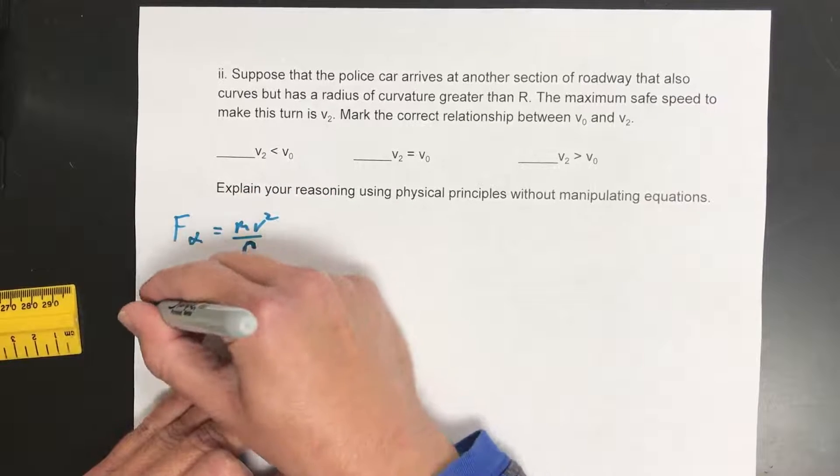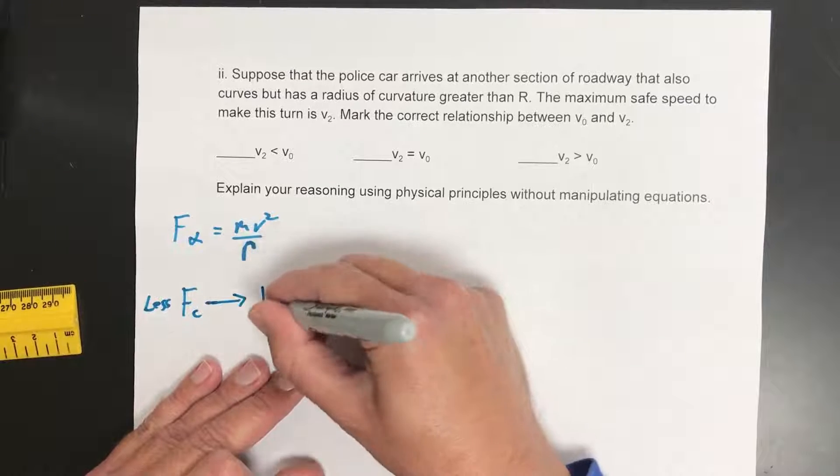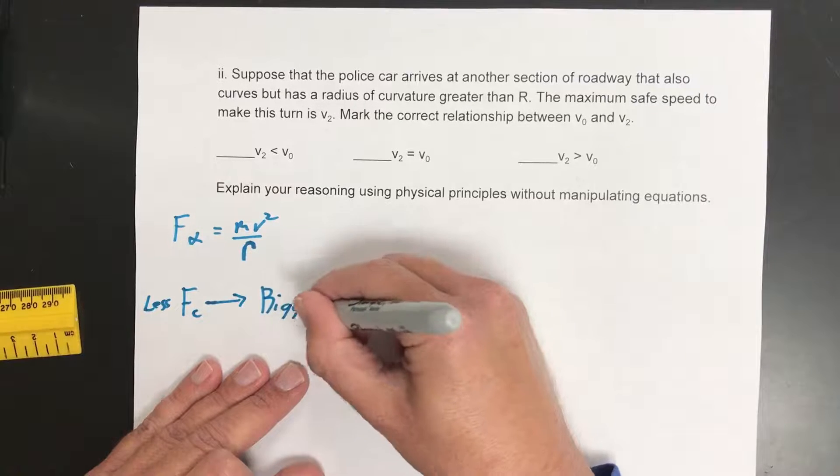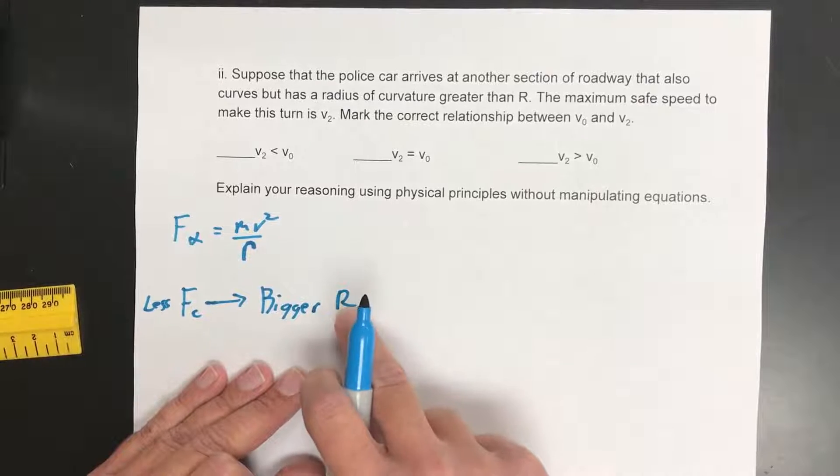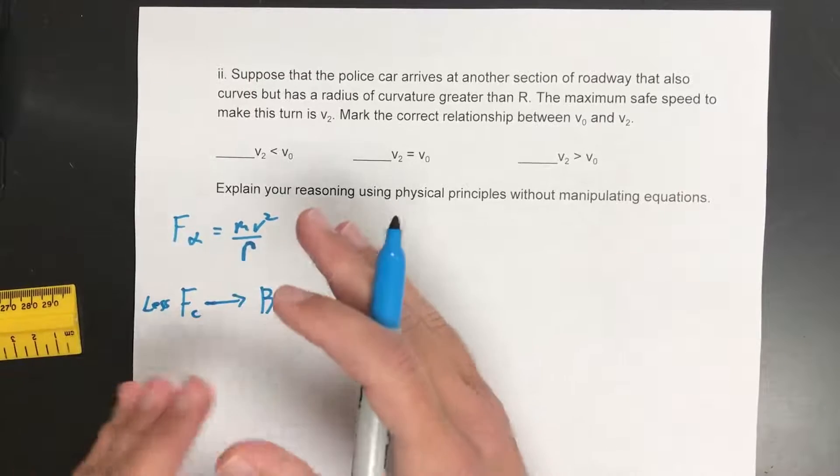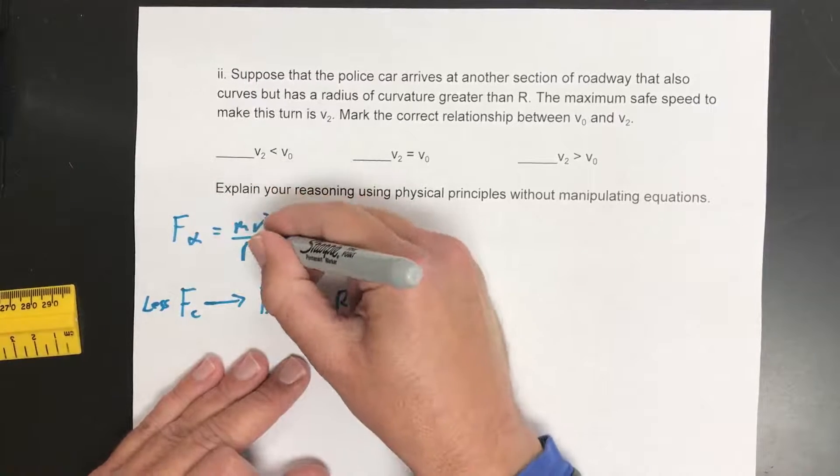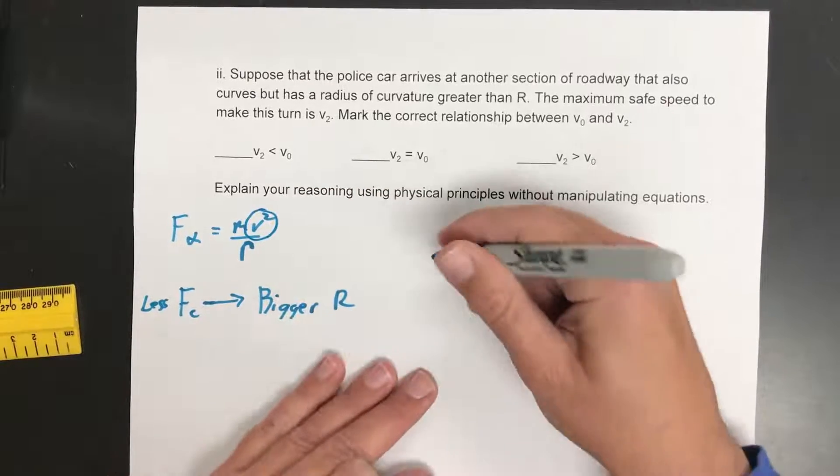So less centripetal force is needed when you have a bigger radius. If you go the other way, the bigger the radius, the less centripetal force we need. Not that we have, that we need. So that means that we can get a bigger velocity.